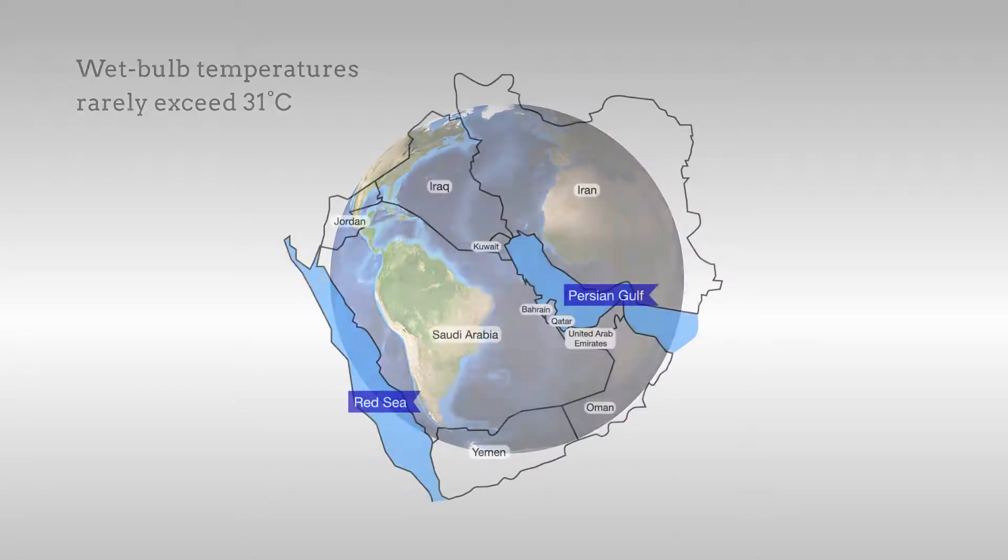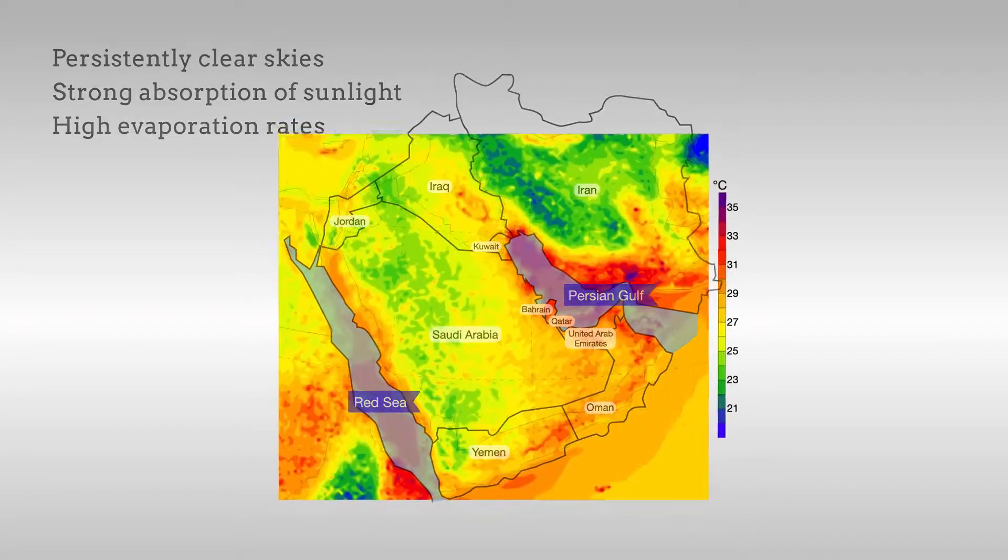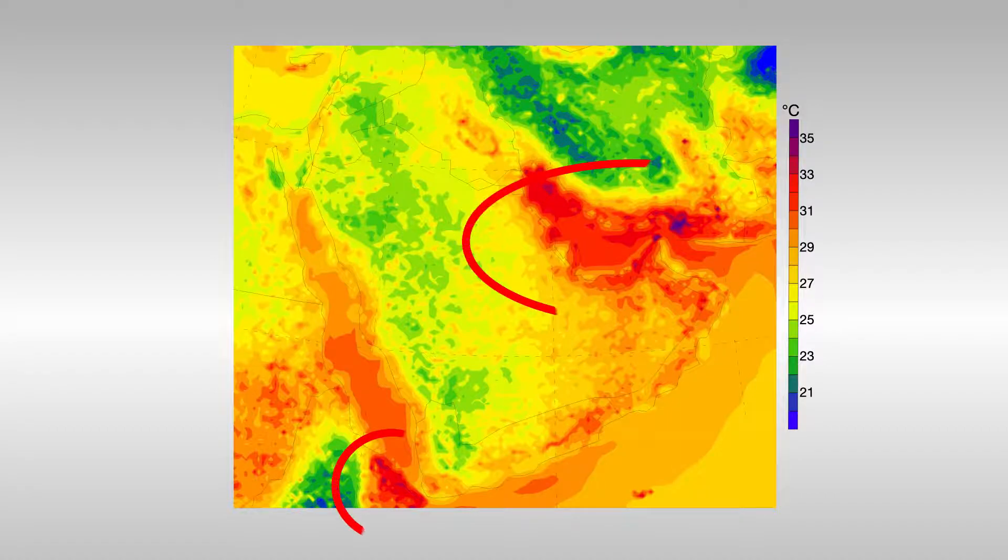But over the Persian Gulf and Red Sea, persistently clear skies, strong absorption of sunlight, and high evaporation rates combine to maximize the flow of heat over these regions, producing wet bulb temperatures that have historically exceeded 31 degrees Celsius.